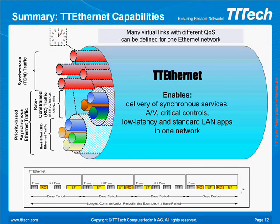On this slide, four synchronous time-triggered Ethernet streams are shown in red. They are robustly separated from other asynchronous, priority-based, or rate-constrained data streams such as IEEE-DCB or AVB and other lower priority standard Ethernet traffic.